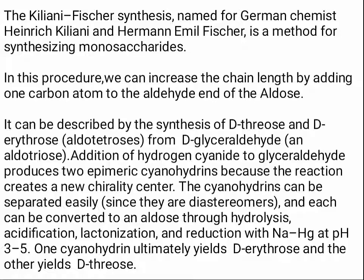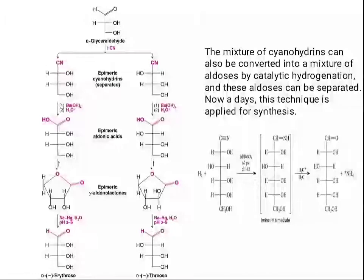Addition of hydrogen cyanide to glyceraldehyde produces two epimeric cyanohydrins, because the reaction creates a new chirality center. The cyanohydrins can be separated easily since they are diastereomers, and each can be converted to an aldose through hydrolysis, acidification, lactonization, and reduction with sodium amalgam at pH 3 to 5. One cyanohydrin ultimately yields D-erythrose and the other yields D-threose.